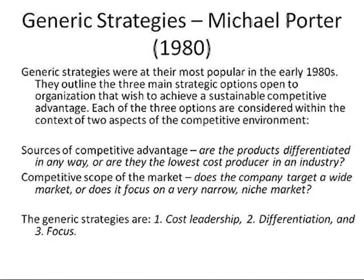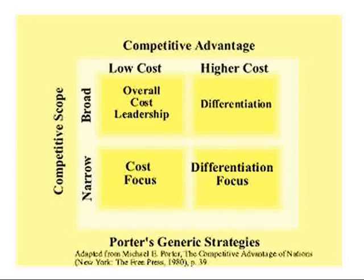Michael Porter in 1980 developed three generic strategies. When we look at competitive advantage, we need to understand what we mean by it. Simply put, competitive advantage is where you make above average profits compared to your competitors — something you can measure. The three generic strategies are a source of competitive advantage. Originally this came out as a triangle, but we need to make it a little more user friendly.